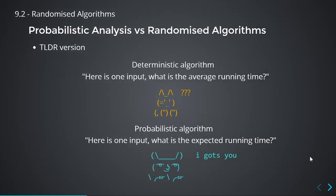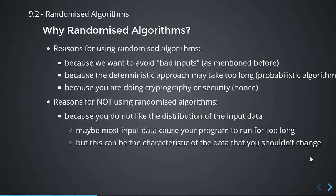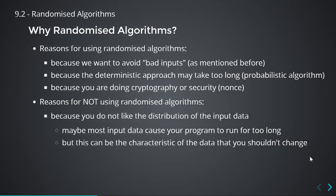Here's the TLDR version. Deterministic algorithm: here's one input — what's the average running time? No idea. With a randomized algorithm: here's one input — what's the average running time? Well, it doesn't matter. You give me an input, I'm just going to randomize it anyway, so I know the distribution. And why do you want to use randomized algorithms? The first reason is you want to avoid bad inputs — inputs that cause your algorithm to run close to the worst-case complexity, like the assignment operations in FindMax.